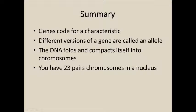In summary: you have genes which code for a characteristic, something like eye colour or hair colour. Different versions of a gene are referred to as an allele, and you usually have two alleles per gene. The DNA will fold in on itself and compact itself into shapes called chromosomes, of which you have 23 pairs — sometimes referred to as 46. This is true for every cell in your body with the exception of sex cells and red blood cells.